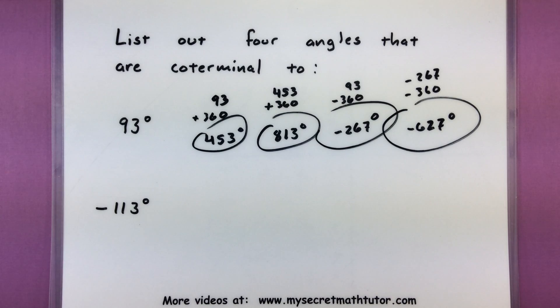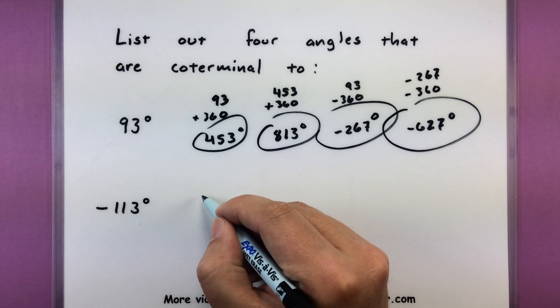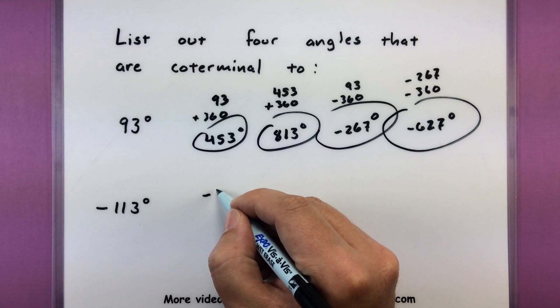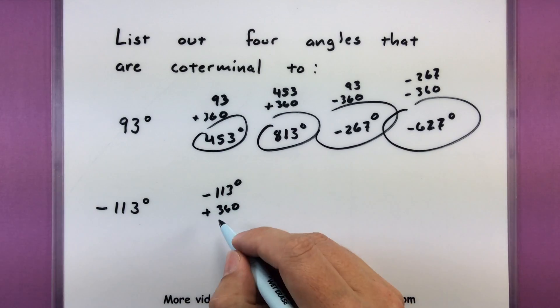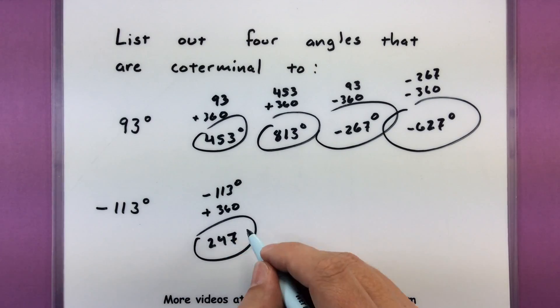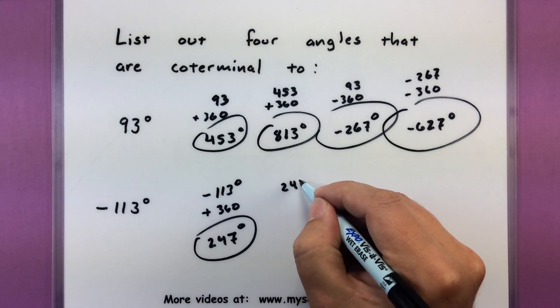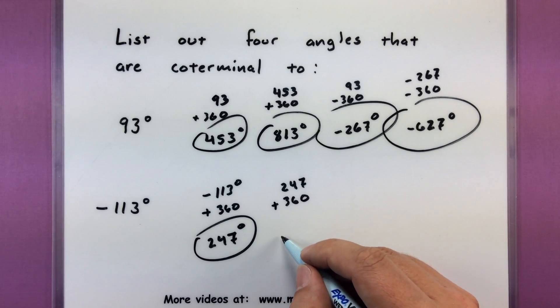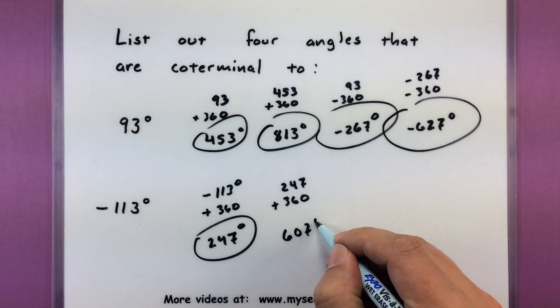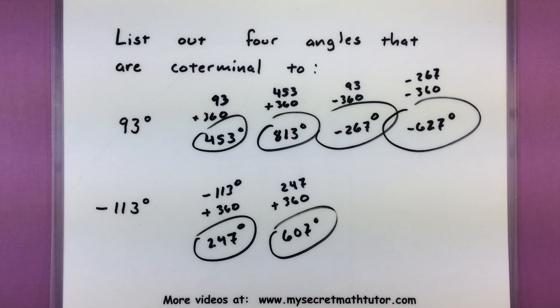So here's four of them, but I could go on and on with this as long as I want. Let's do this one more time, let's start off with negative 113. Let's add 360 to this, that'll give us 247, so there's one coterminal angle. Let's take that previous one, add another 360. This will give us 607. So now I have two positive coterminal angles. Let's find a couple of negative ones.